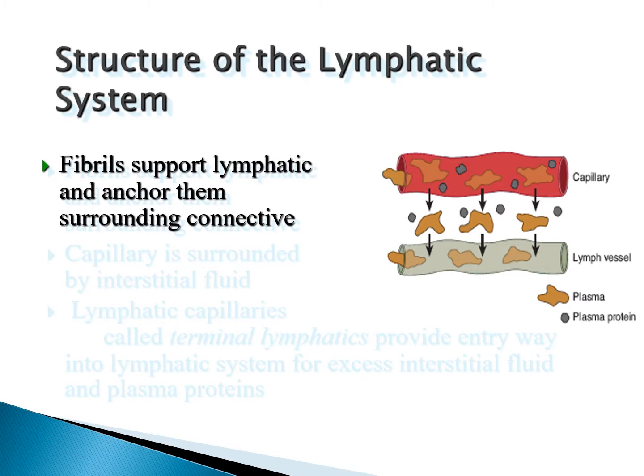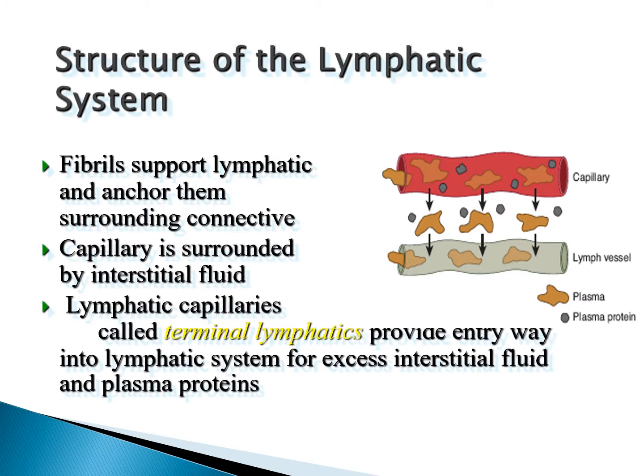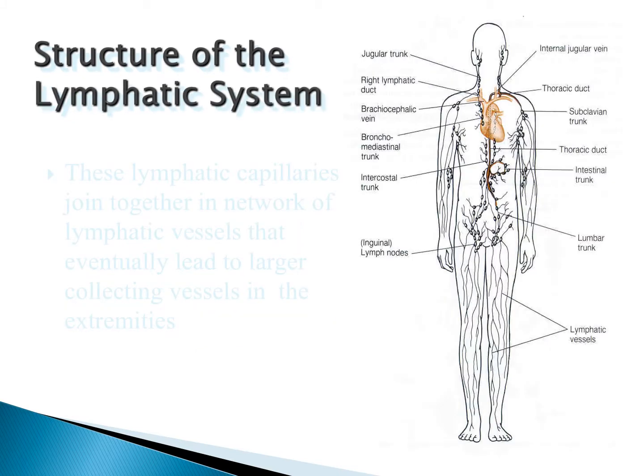Fibrils support the lymphatic system and anchor them to surrounding connective tissue such as veins and muscles. Capillaries are surrounded by interstitial fluid. Lymphatic capillaries, called terminal lymphatics, are the end of the lymphatic system and provide an entryway for excess interstitial fluid and plasma proteins to both transfer to the tissue and then out of the tissue.